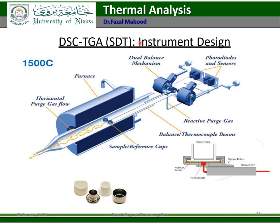The instrument used for simultaneous DSC and TGA has sample and reference cups, purge gas flow, a furnace for heating, a balance, a photodiode and sensors, and a computer. Here you can see the different sample holders used.